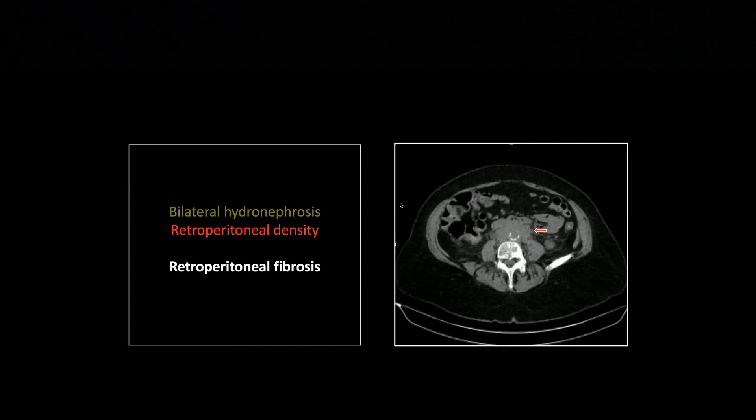The important thing to note here is that this soft tissue density does not surround the aorta. Because your differential here is retroperitoneal lymphoma. Lymphoma tends to go under the aorta between the aorta and the vertebral body, whereas retroperitoneal fibrosis will stay on the anterior and lateral aspects of the aorta.